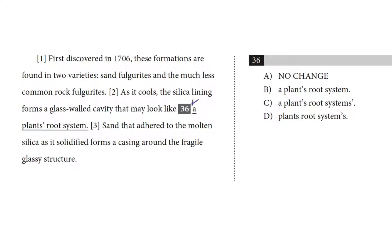So question 36 begins here, so I am going to read us in from the beginning of the paragraph. First discovered in 1706, these formations are found in two varieties: sand fulgurites and the much less common rock fulgurites.